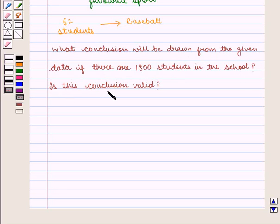Is this conclusion valid? And from the above data we are given that 62 students like to play baseball. And we can now find the number of students in school who like baseball from the sample.